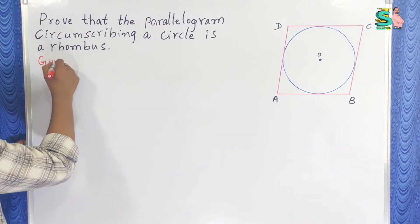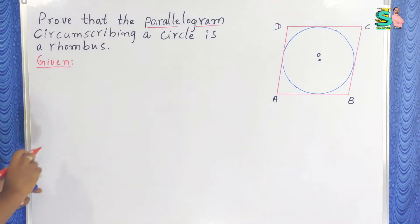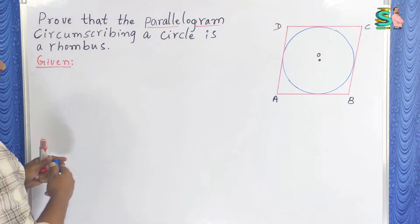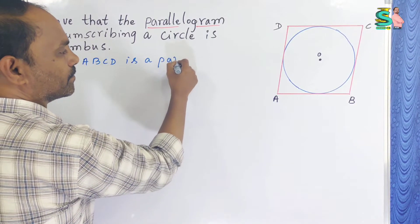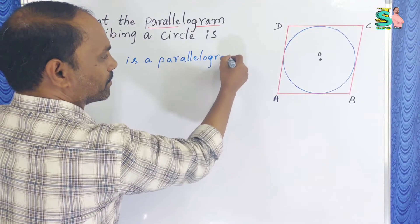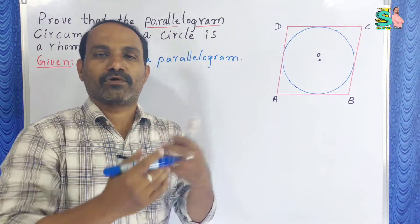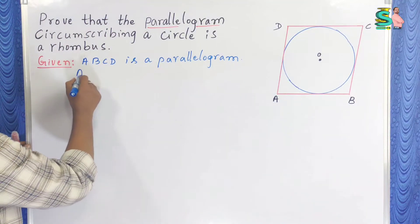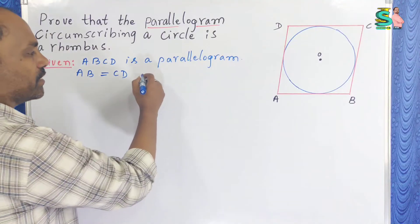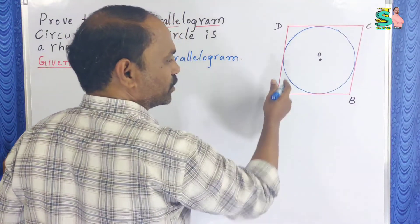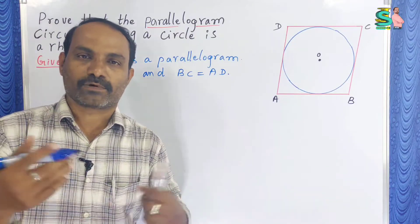First, given — what is given in the question? A parallelogram is given. ABCD is a parallelogram. Already we know that in a parallelogram, opposite sides are equal. So AB is equal to CD, and BC is equal to AD. That is from the properties of a parallelogram — opposite sides equal.